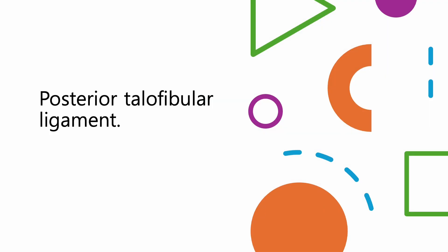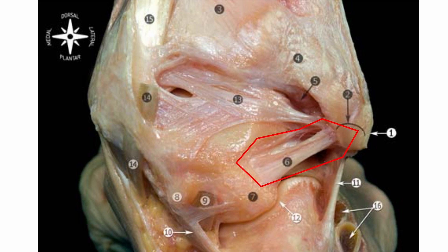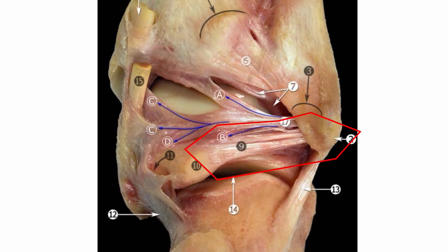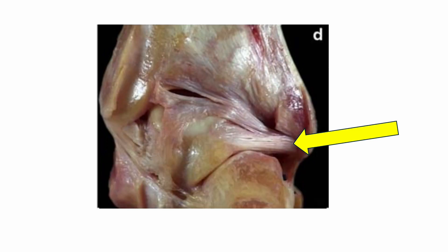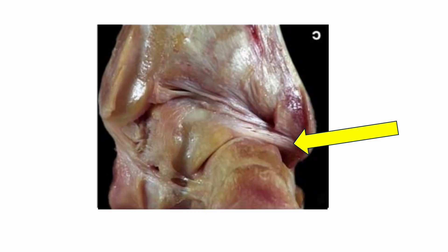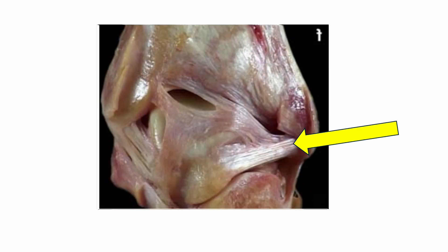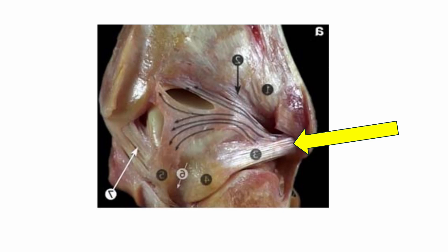Posterior talofibular ligament. The posterior talofibular ligament is an integral component of the ankle's lateral ligament complex, crucial for stabilizing the ankle joint. It is situated at the back of the ankle, so most doctors need to pay more attention to the posterior talofibular ligament in their examination protocol. It extends from the medial aspect of the lateral malleolus of the fibula to the posterior process of the talus. This ligament is the strongest and least injured among the lateral ankle ligaments, largely due to its protected positioning and robust structure. Damage to the posterior talofibular ligament can lead to posterior instability of the ankle, which may manifest as difficulty walking, especially on uneven surfaces, or pain during activities.